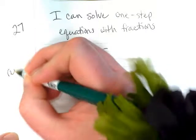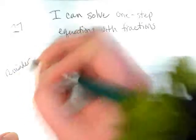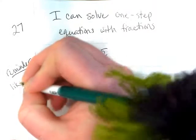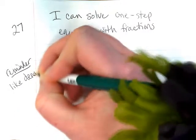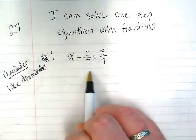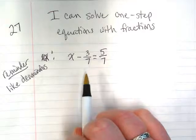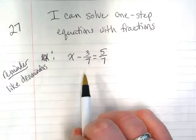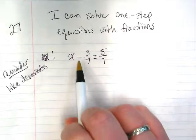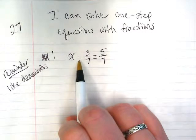Just a reminder, when we're working with adding and subtracting fractions, we have to think about like denominators. This example does have like denominators, so we can now just look at it as an equation. And just like when we're adding and subtracting whole numbers or decimals, we want to look at the operation and do the opposite.